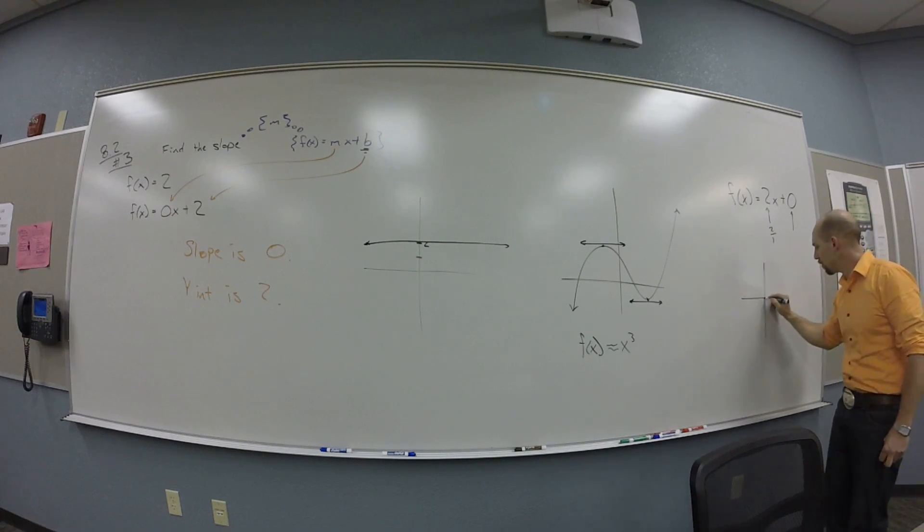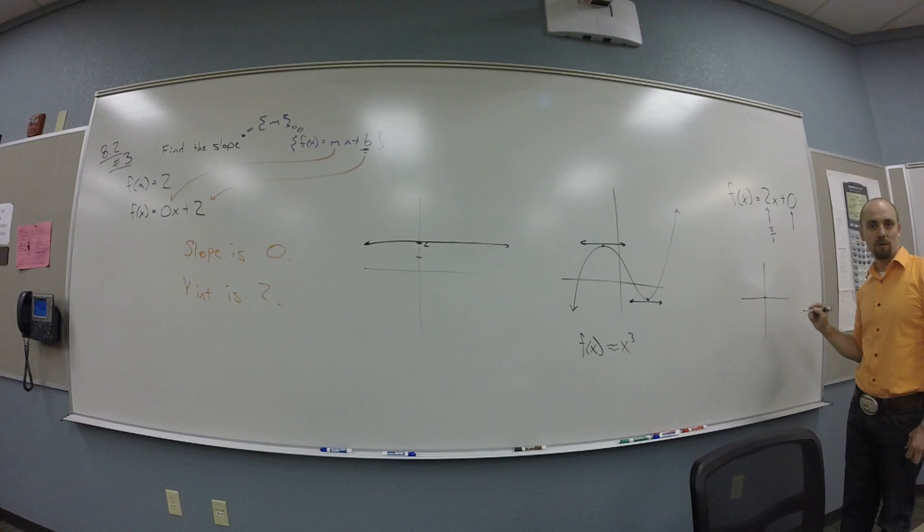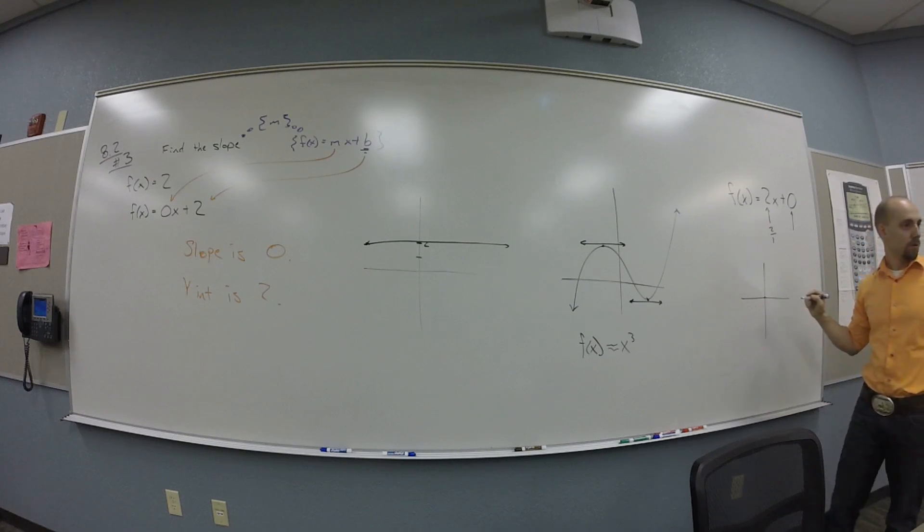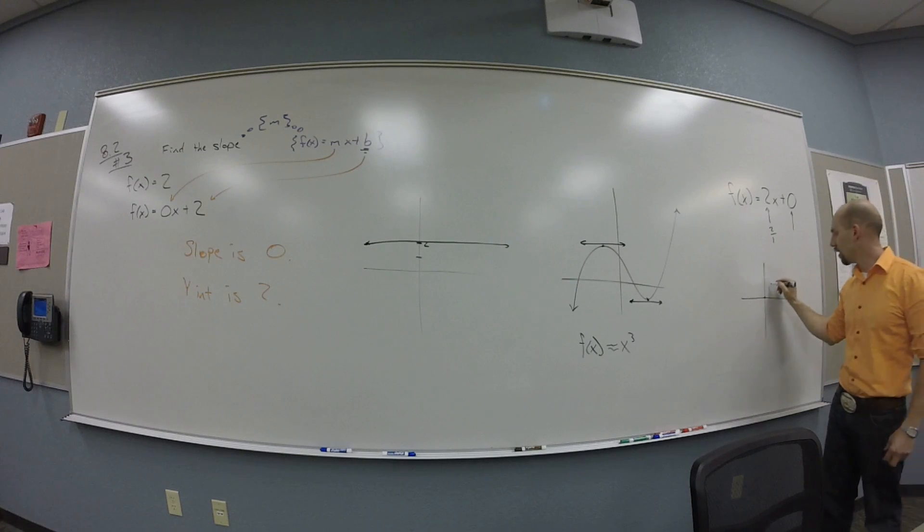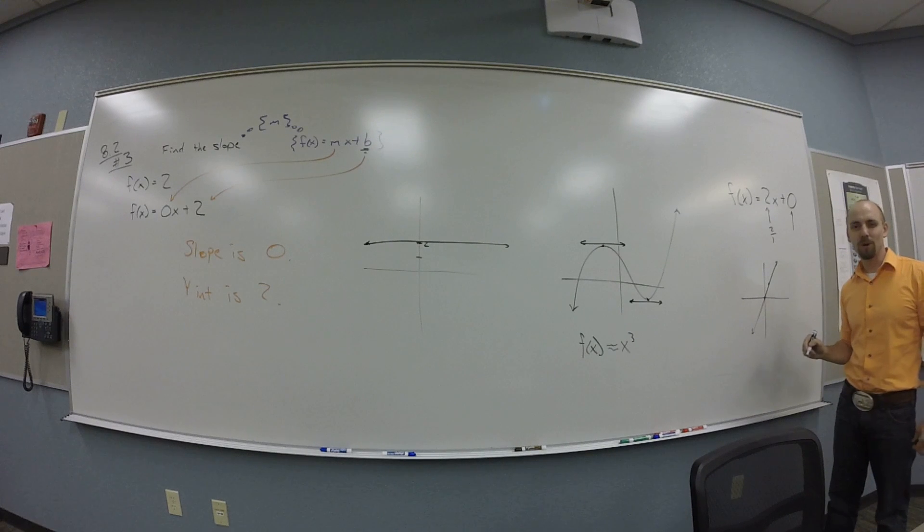So this is going to go through 0, 0. And then it's going to go 2 up, 1 over, or 1 over, 2 up, right? So I'm looking at some kind of line like this. This isn't quite what you were thinking.